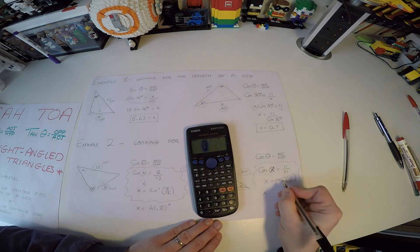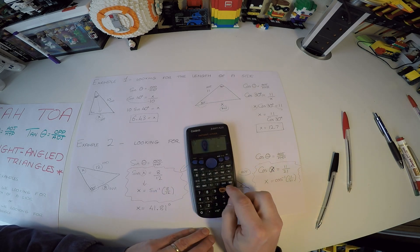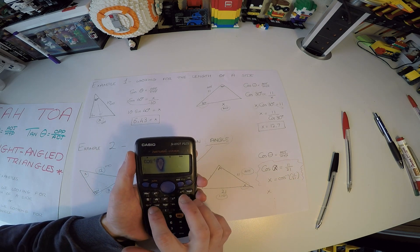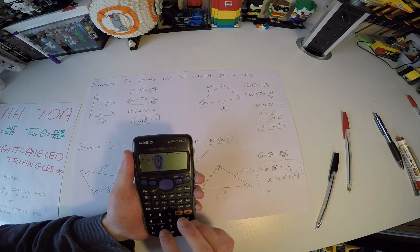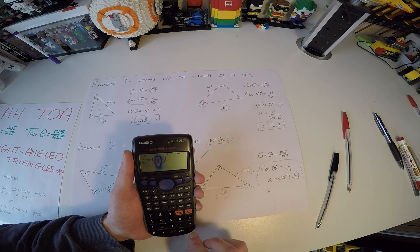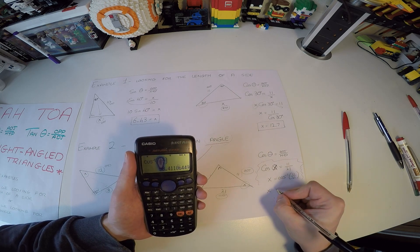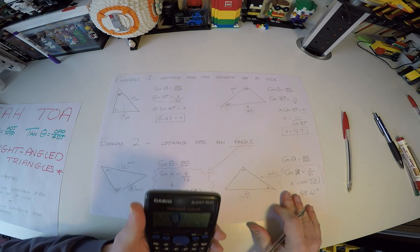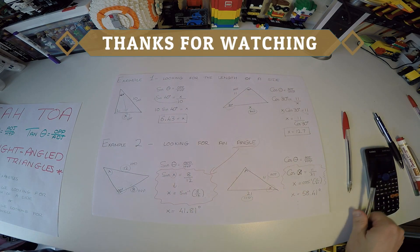So our answer is going to be this stuff put into a calculator. So shift and the cosine button now gives me cosine inverse. And again, I'm sorry about the calculator. I'll just have to replace it. And we get 58.41. And of course, that is degrees. And that's a basic introduction to the SOHCAHTOA rules.